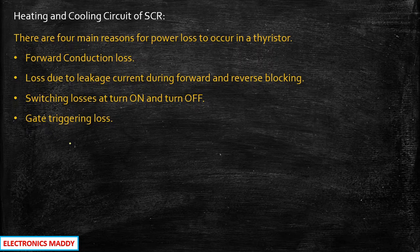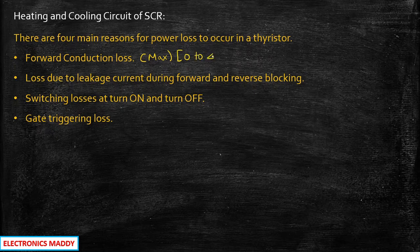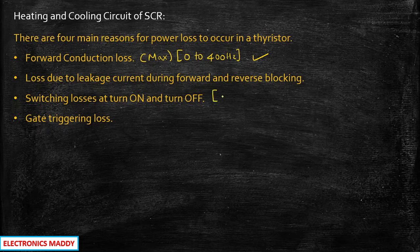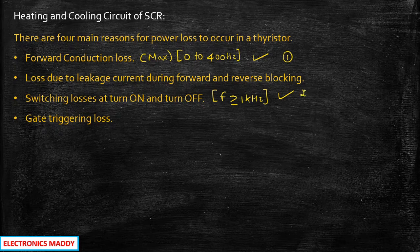The forward conduction loss is the loss that has the maximum value during operation, occurring at frequencies in the range of 0 to 400 Hz. In industrial applications, forward conduction losses are maximum, so this loss is very important and needs to be taken into consideration. When talking about frequencies much greater than 1 kHz, the switching losses will also go high. So we have two important losses to consider: forward conduction loss and switching loss for higher frequency ranges.